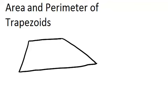First, let's review what a trapezoid is. A trapezoid is a quadrilateral, so it has four sides, and the definition is it has one pair of parallel sides. So these two sides are parallel.